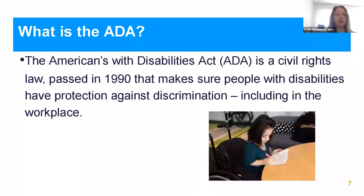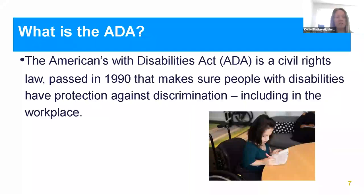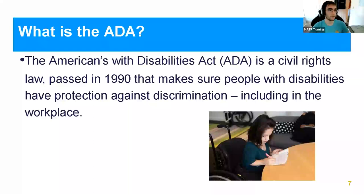So what is the ADA — the Americans with Disabilities Act? That is a civil rights law for individuals with disabilities that, in its basic form, says there's equal access, period. It was passed on July 26, 1990, so we just celebrated the 32nd annual passage of that act. The ADA is a civil rights law that makes sure people with disabilities have protection against discrimination, including in the workplace. The image on this slide is of a wheelchair user who is writing on a piece of paper.